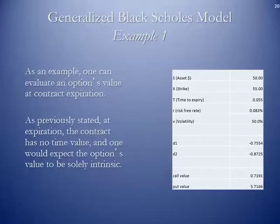The asset price is the current market price. In this scenario, the current market price for crude oil is $50. The desired strike price for the option was $55. So in this particular case, this would be a call option.